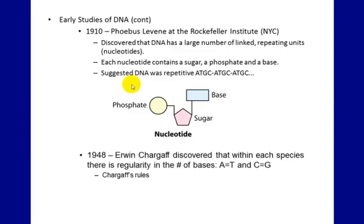A little bit later, in 1948, Chargaff came along and figured out that the ratios of A to T are always the same, and the ratios of C to G are always the same. So A's and T's, C's and G's always are in the same proportion. That's called Chargaff's rule.